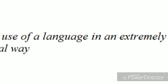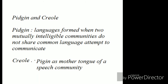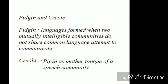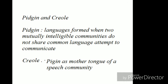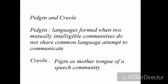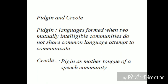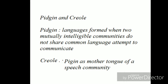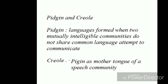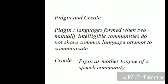Slang is the use of language in an extremely informal way. Pidgin and Creole: when two mutually unintelligible speech communities who do not share a common language come into contact, they create a language in order to communicate — such languages are called pidgin languages. When a pidgin language turns into the mother tongue of a speech community, it is called Creole. For example, at the time of colonization in India, pidgin English was spoken between the British and the natives, such as Butler English of Madras and Pidgin English of Bombay.